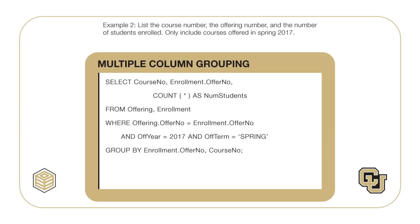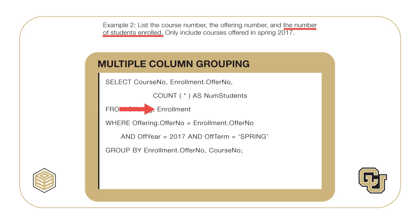Let's use the critical questions on Example 2, answering the questions before reviewing the associated SELECT statement. For the first critical question on the tables, the offering table is needed because of conditions on offering year and term, as well as columns in the result — course number and offer number. The enrollment table is needed because of the number of students enrolled in the result. The course table is not needed because course number can be taken from the offering table, as this column does not have null values. The student table is not needed because no columns are used. The enrollment table can be used to compute the number of students enrolled, as each enrollment row is associated to a student row.